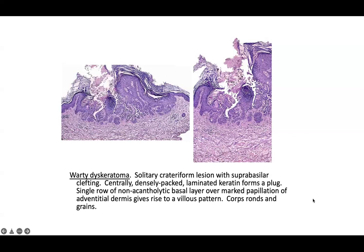You will appreciate corps ronds and corps grains, which you also see in Darier's disease. This is kind of like a localized form of acantholysis and dyskeratosis so it can look very similar to Darier's. Usually Darier's is more widespread, but without a clinical history of a single lesion it would be difficult to tell. For exam purposes, they'll usually give you enough information — either through a clinical vignette or the architecture — to identify it as a single lesion.